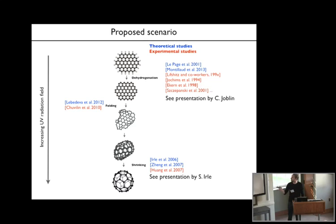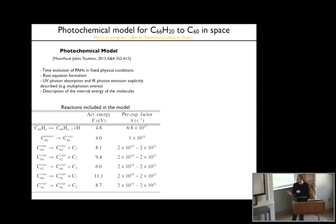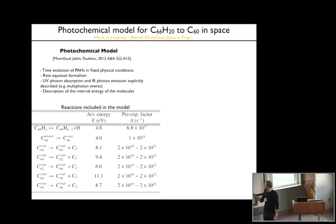So this evolutionary scheme is just getting things together from different fields where each step has been studied somewhat independently. Of course this is just a proposal and you have to try and evaluate if this is possible by using a photochemical model.